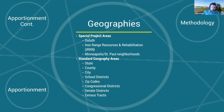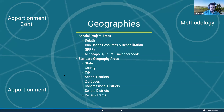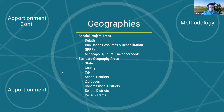The standard geographies - state, county, city, school districts, zip code, congressional districts, senate districts, and census tracts - you can get that information directly from the Census API. You just say give me the statistical information for whatever variables you're requesting for Minnesota or St. Louis County, and it returns that information in a JSON string you can interpret and manipulate.